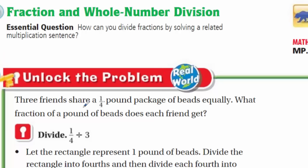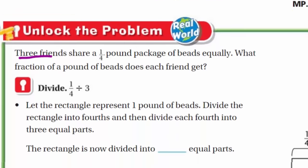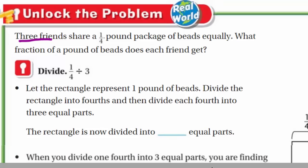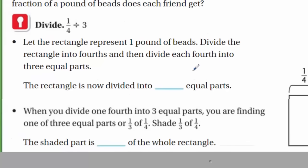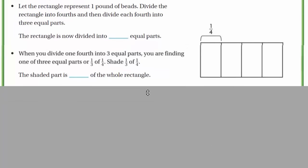Since this is our dividend, that's how many beads we have, and we're dividing it equally with three friends, which is listed here, that's our expression. Let the rectangle represent one pound of beads. I see a rectangle down there. And it says divide the rectangle into fourths and then divide each fourth into three equal parts.